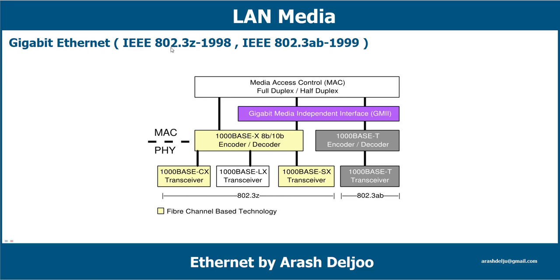The IEEE 802.3z standard specified Gigabit Ethernet operation over fiber and coaxial cable and introduced the Gigabit Media Independent Interface (GMII). The GMII connects different types of physical layers to MACs, meaning different physical devices — for twisted pair, fiber optic, etc. — can be used without redesigning the MAC hardware. Thus, any MAC can be used with any physical medium.